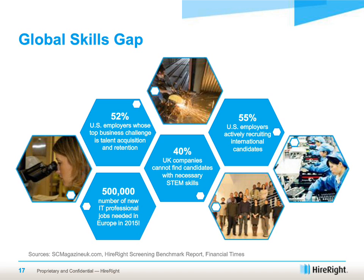There's a massive global skills gap. 52% of U.S. employers say their top business challenge is talent acquisition and retention. 40% of U.K. companies cannot find candidates with the necessary STEM skills. And 55% of U.S. employers are actively recruiting international candidates. Although unemployment has hovered around the same percentage in the U.S., when it comes to knowledge-sector roles, it's very difficult to find the right talent, so organizations are sourcing globally — and that's not just a U.S. problem, it's a global problem.